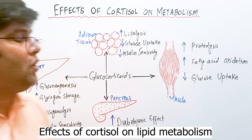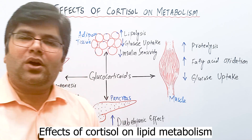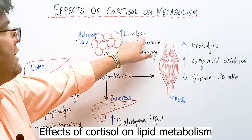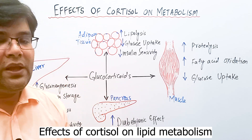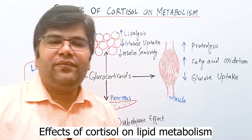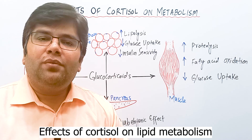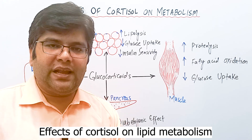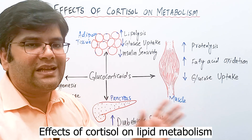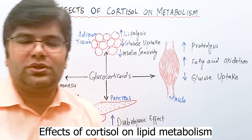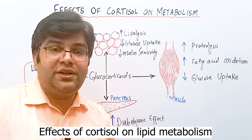Cortisol has a lipolytic effect — it breaks down lipids, especially triglycerides. When triglycerides are broken down, free fatty acids are released and enter the liver via the blood, where they are oxidized. The elevated free fatty acids have an anti-insulin effect and divert metabolism toward increased gluconeogenesis and decreased glycolysis. Fatty acid oxidation is also increased in muscles, so muscles use fatty acids as energy instead of glucose. This increased fatty acid oxidation can raise ketone body production and cause ketosis, especially in diabetes mellitus.